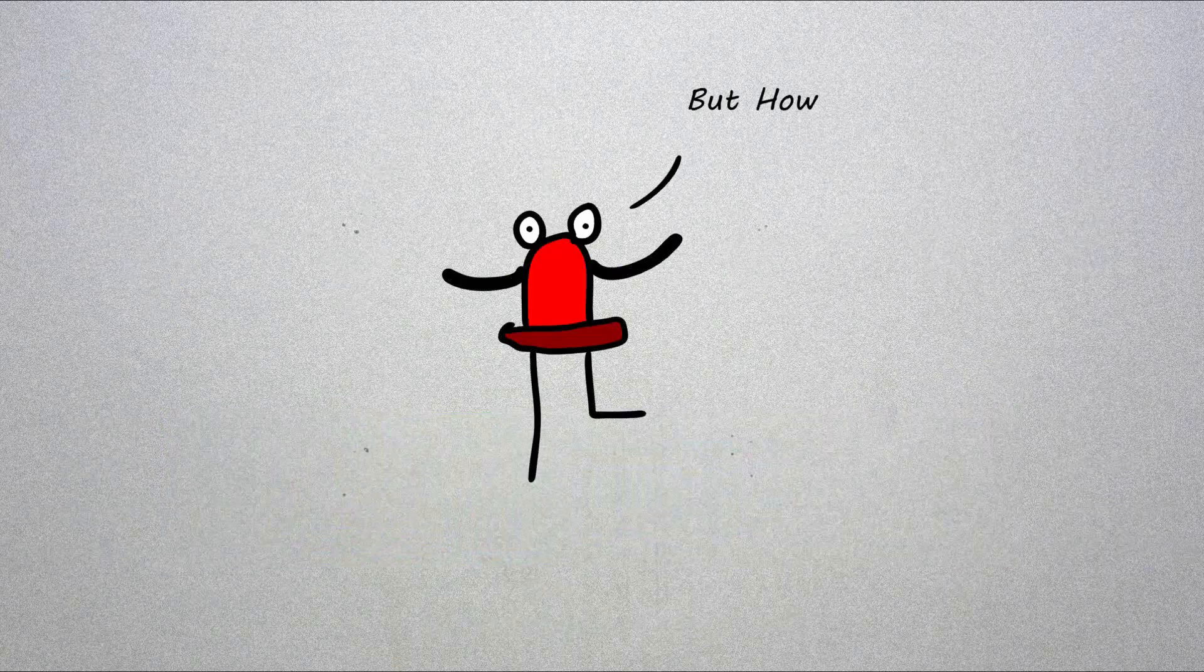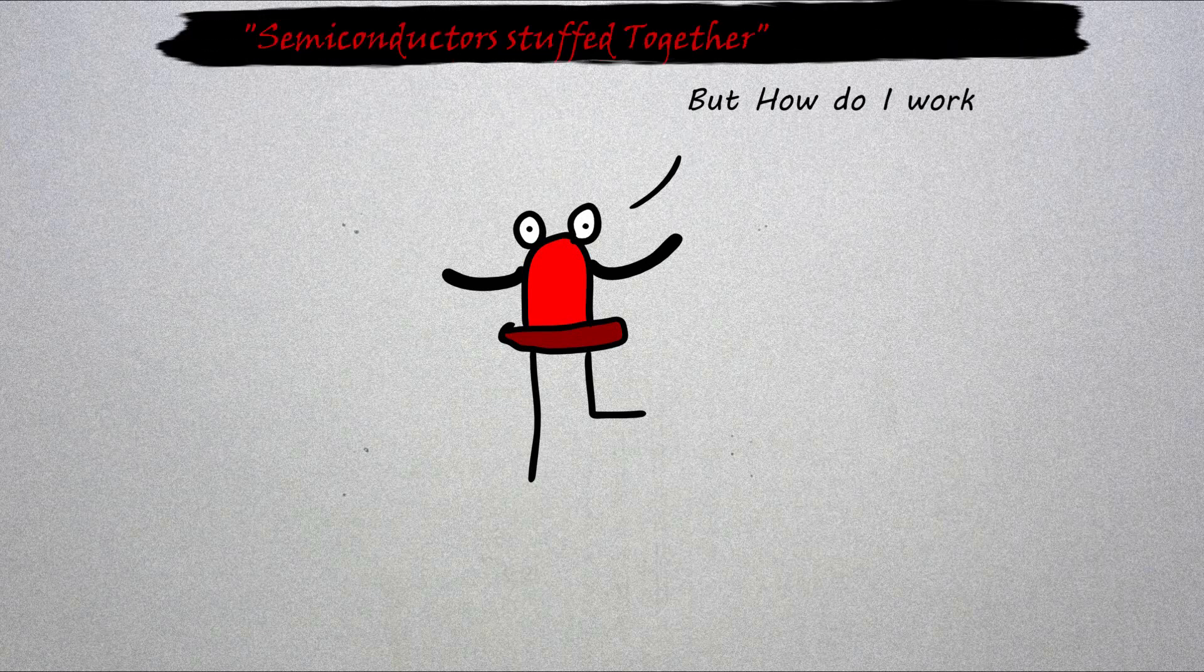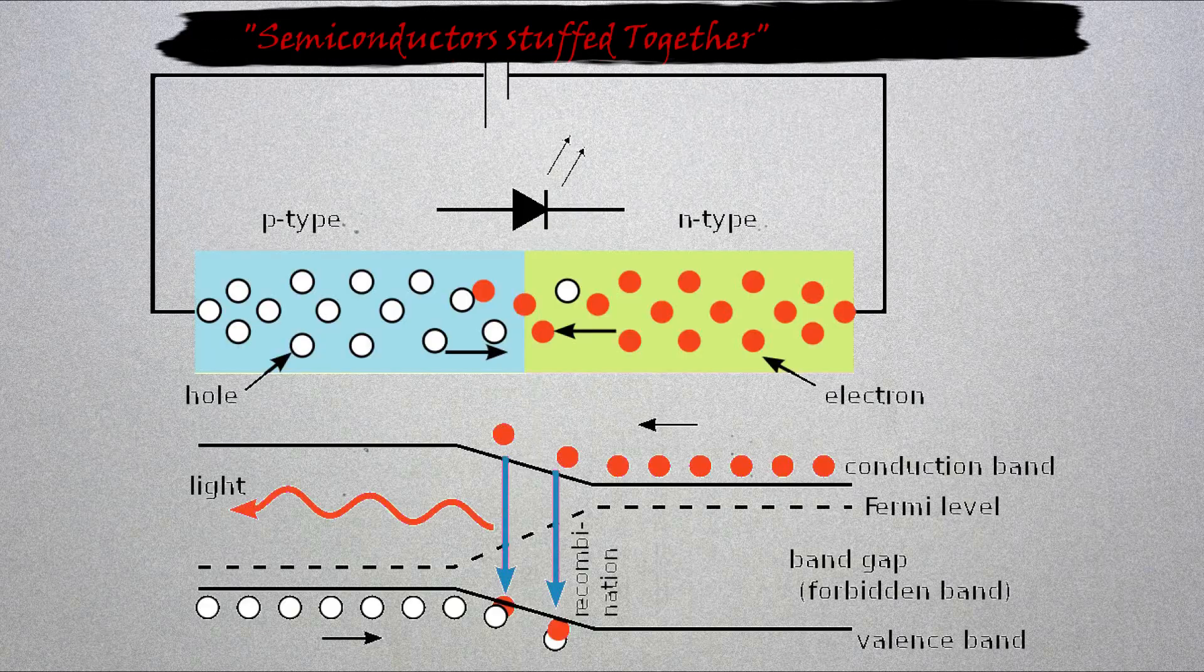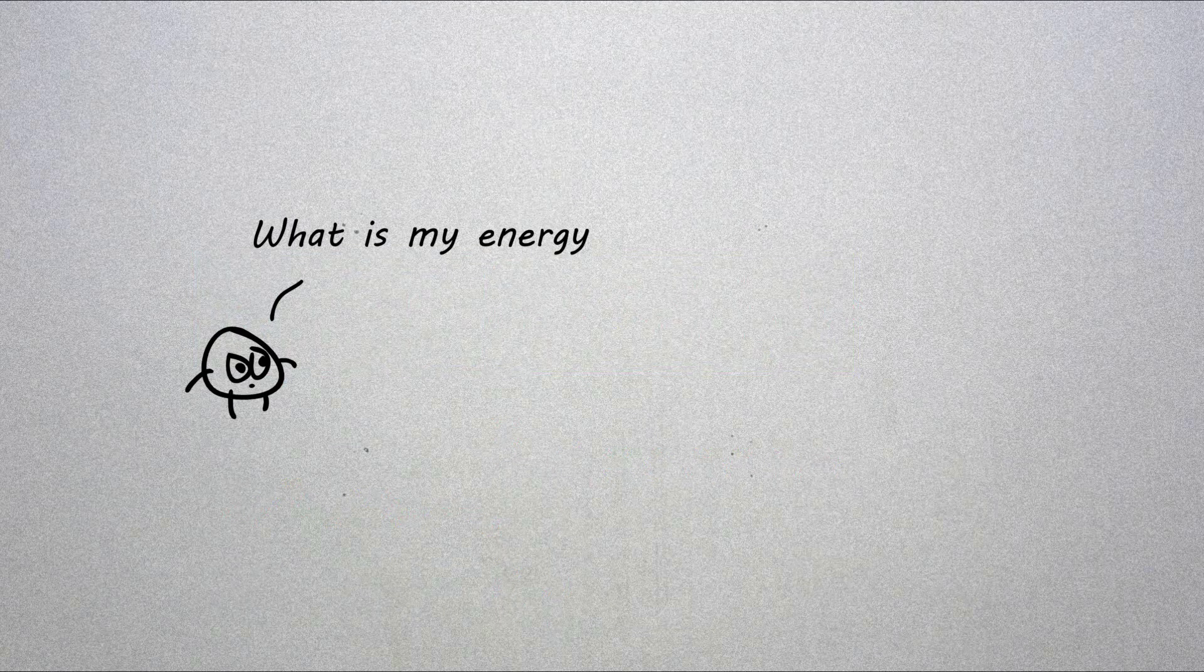To understand this, I'll just do a brief overview of how LEDs work. I promise it won't be long and detailed. LEDs are semiconductors stuffed together. A useful way to visualize the mechanism in semiconductors is to plot out their energies for electrons within the material.